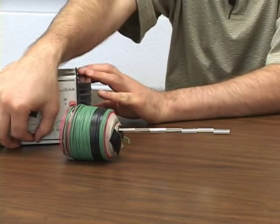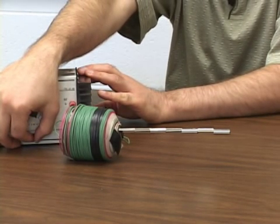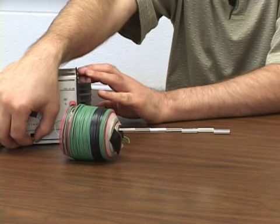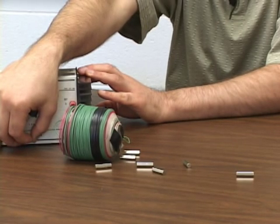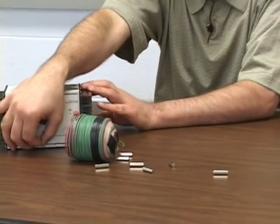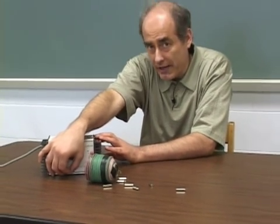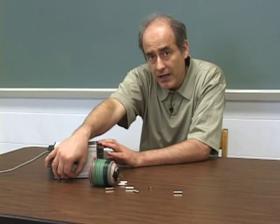At this point I am going to turn the power supply off so no more electricity goes through the wire. No electricity means no more magnetic field and no more electromagnet.